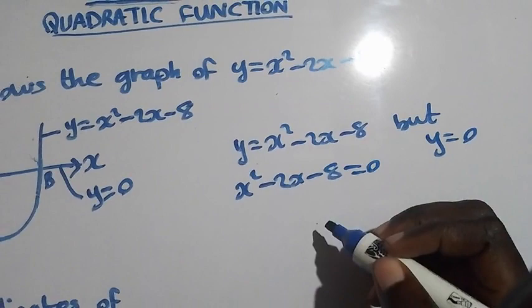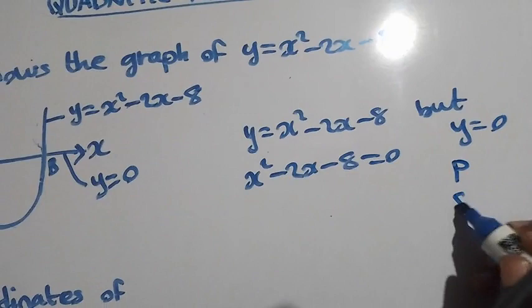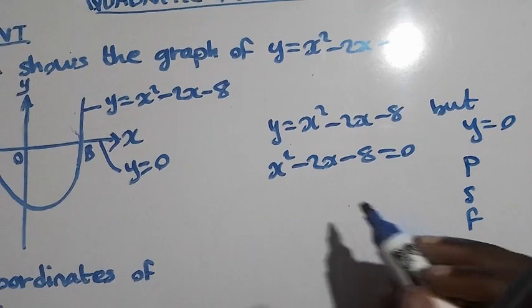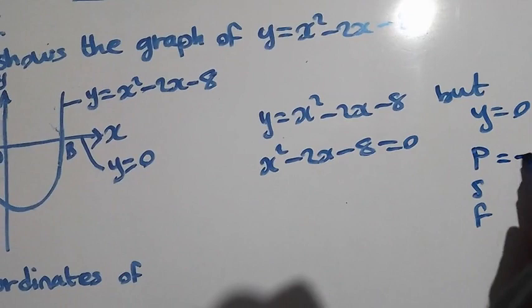So this is now the quadratic equation. At this stage, we need to apply the product-sum-factor method, PSF, where the product is obtained by multiplying the coefficient of x squared by negative 8. The coefficient of x squared is 1, so 1 times negative 8 gives us negative 8.